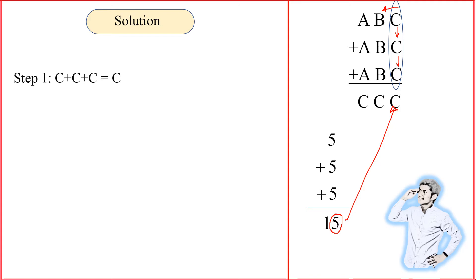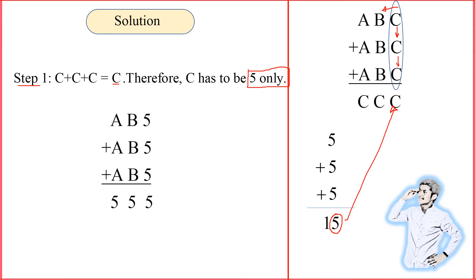So in step one, since C plus C plus C ends in C, C must equal 5. I substitute 5 for every C in the problem. I hope you understand this.